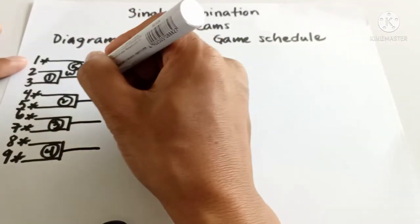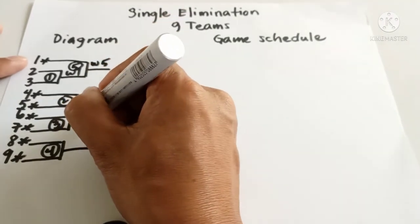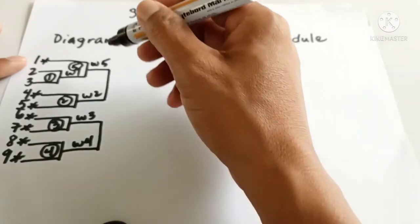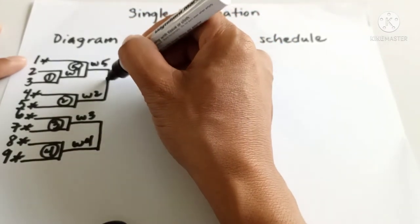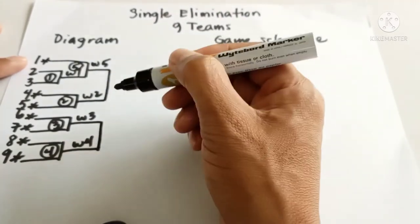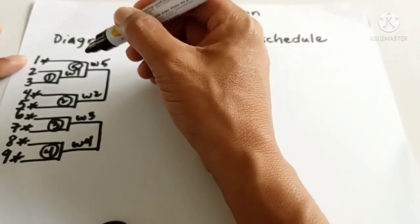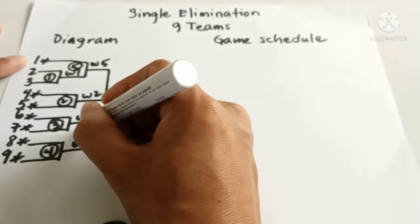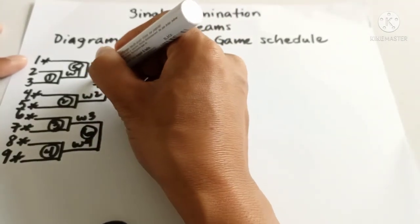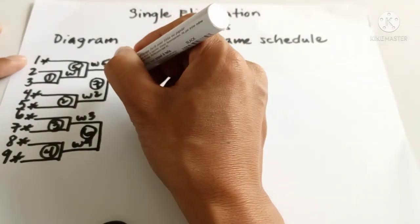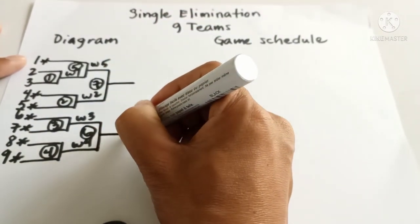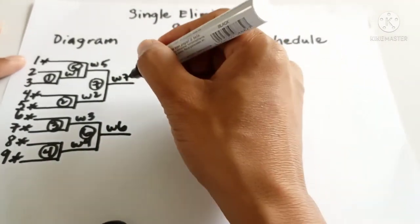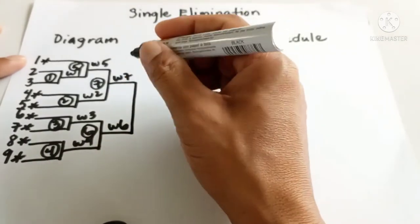From the top: winner five, winner two, winner three, winner four. Now let us have the vertical line, and then the game numbers. Since this is game five, game six must be here, and then game seven. Now let us have the result: winner seven, winner six. And then the final game.